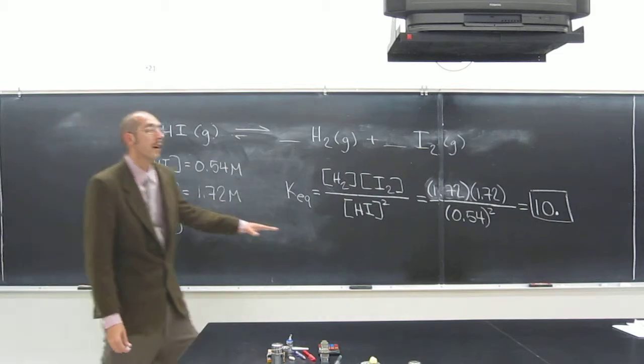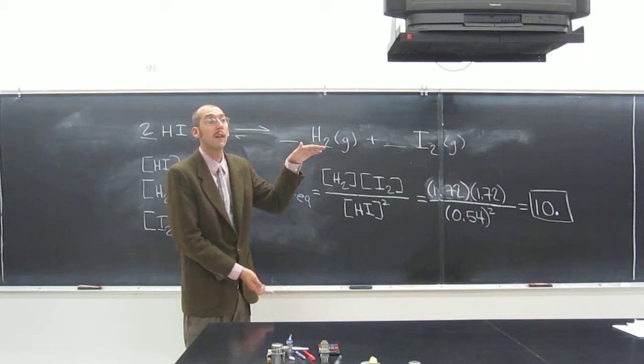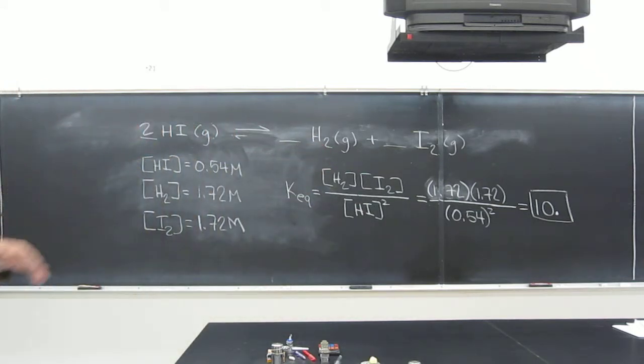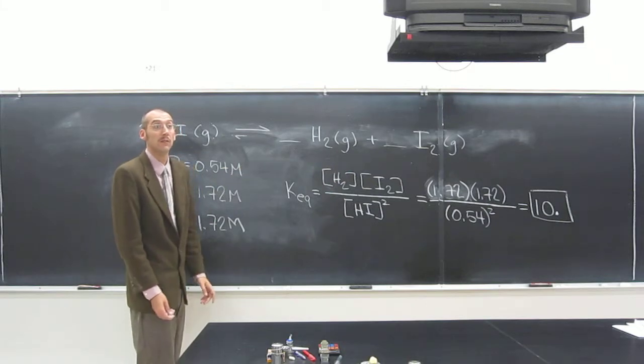If the equilibrium constant was less than 1—it's always going to be above 0—you have to decide whether it's below 1 or above 1. If it's below 1, it means that the reactants are favored, or this is not a very good reaction.